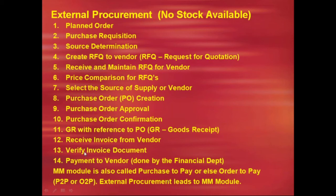Quality declares whether to accept or reject the stock. If accepted, the stock is placed in the warehouse. The vendor then sends an invoice; the company receives, verifies, and releases it for payment. Payment to the vendor is done by the financial department. This entire process — from identifying the need for material to payment to the supplier — is called External Procurement, and it is the scope of the SAP MM module. SAP MM is also known as 'Purchase to Pay' or 'Order to Pay'.